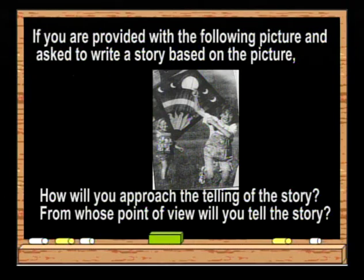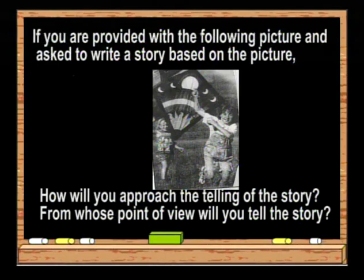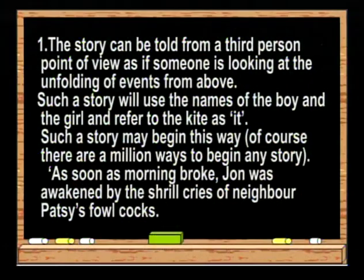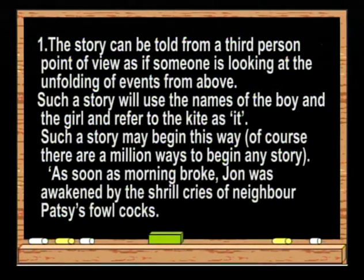For example, if you are provided with the following picture and asked to write a story based on it, from whose point of view will you tell the story? Obviously there is a young boy and a young girl and a kite — they are trying to raise the kite. The story can be told from a third-person point of view, as if someone is looking at the unfolding of events from above. Such a story will use the names of the boy and the girl and refer to the kite as 'it'. There are a million ways to begin any story.